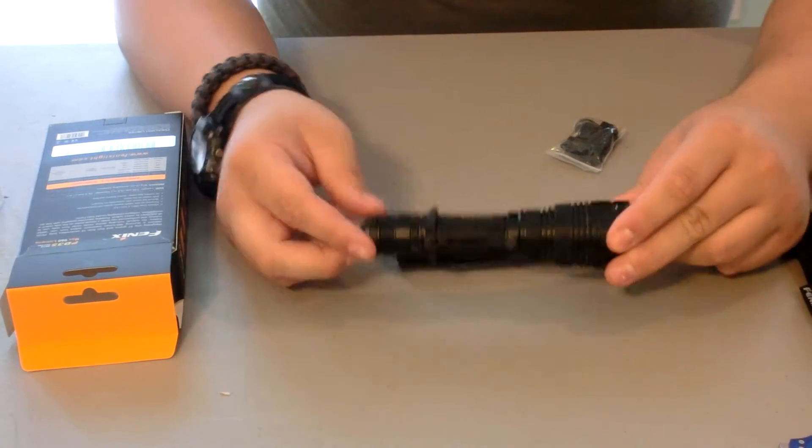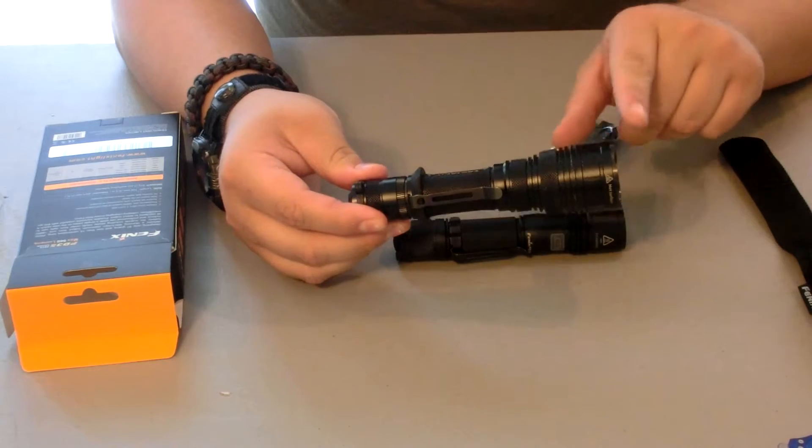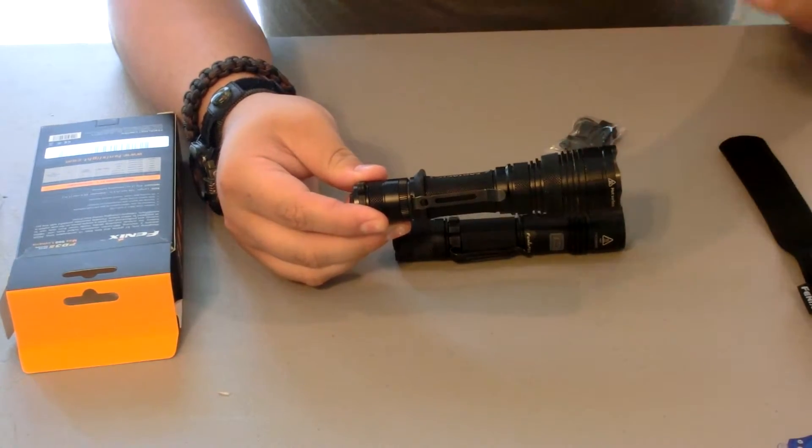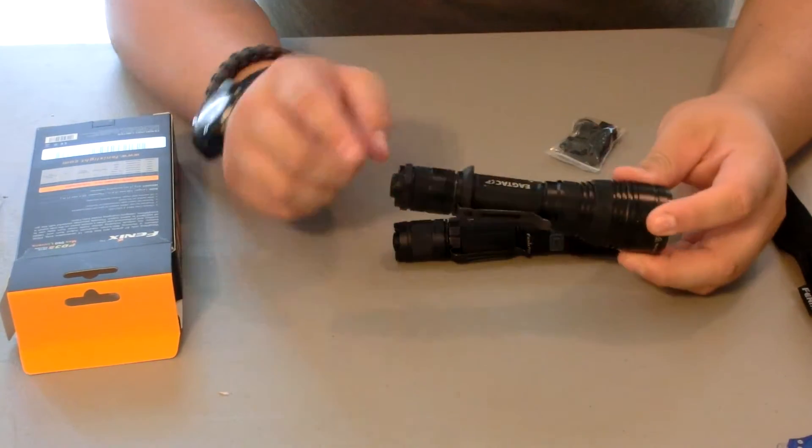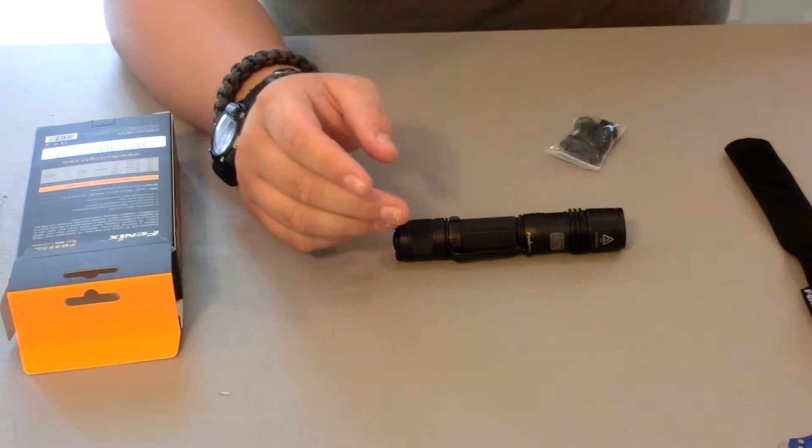The Fenix PD35 is slim all the way through, but the EagleTac starts off pretty slim, but then once it gets up to the bulb area, boom, it just widens out to where that's a two inch diameter and down here is only one inch, so it doubles.